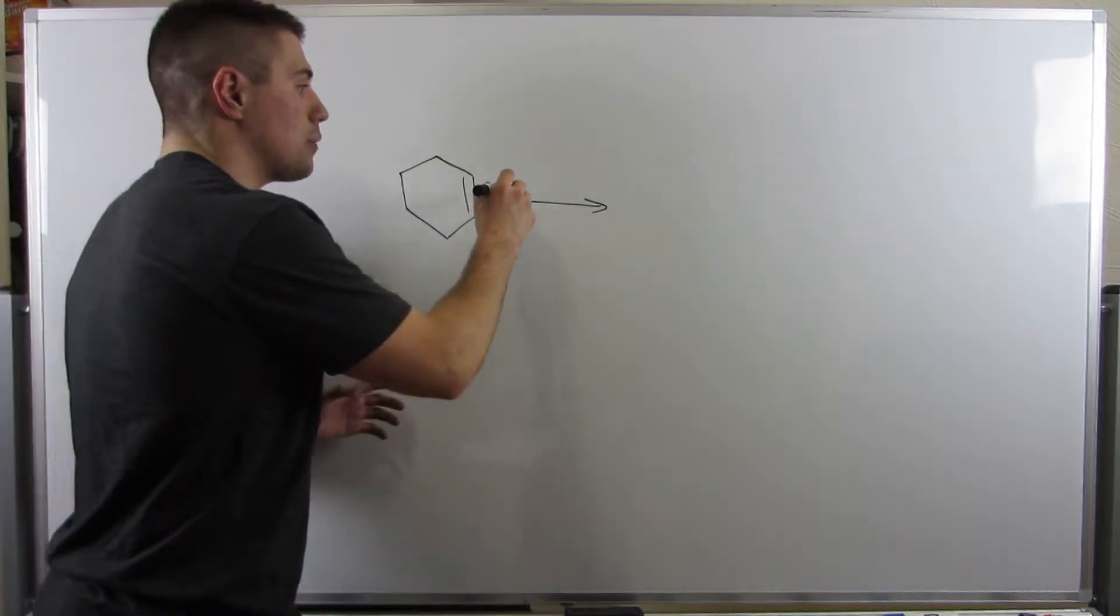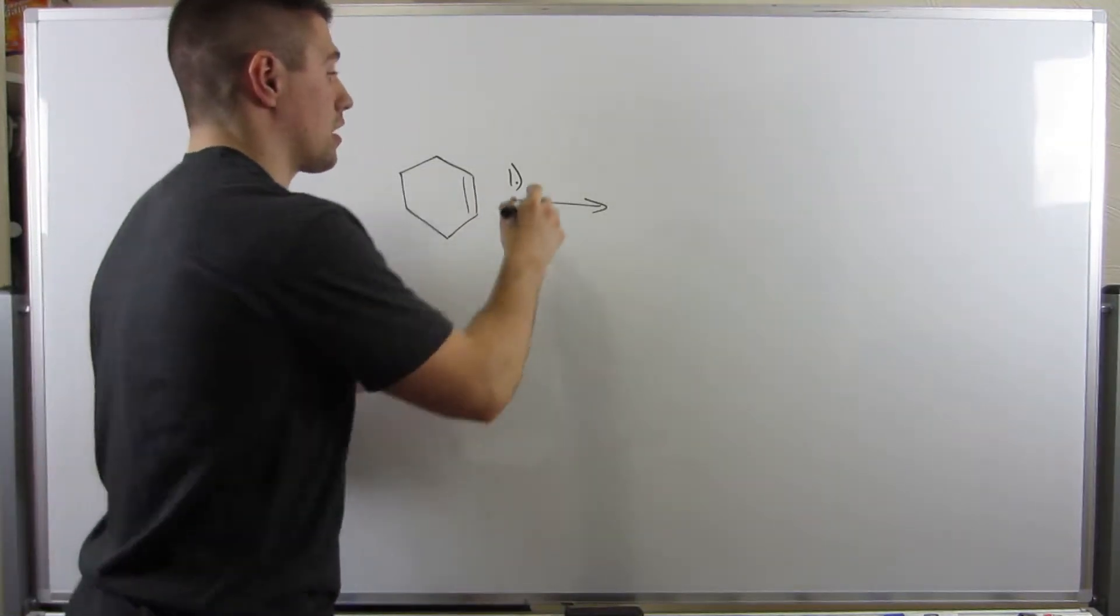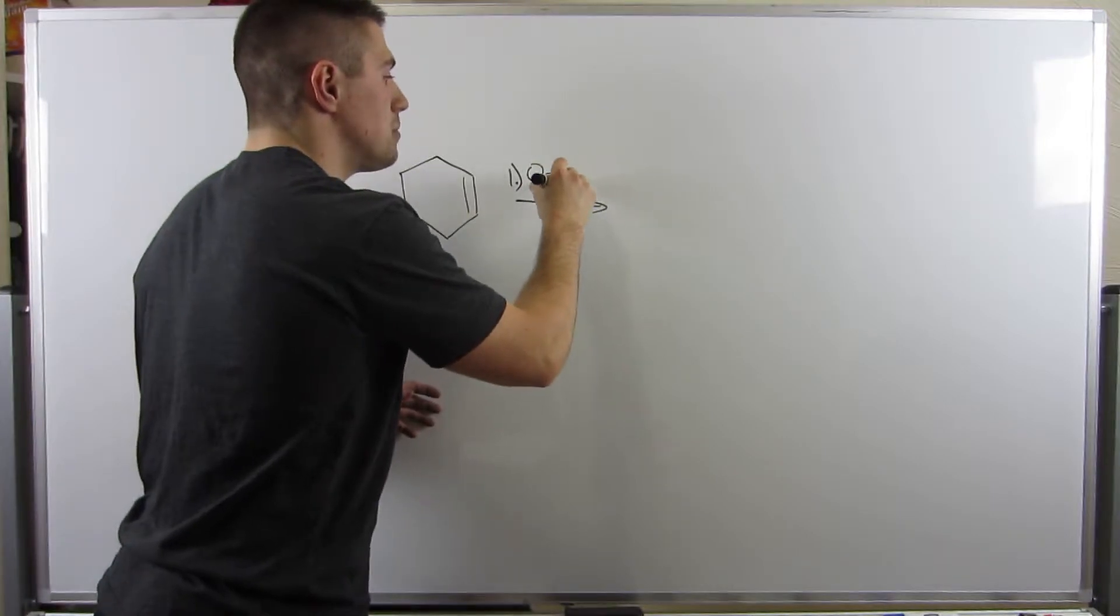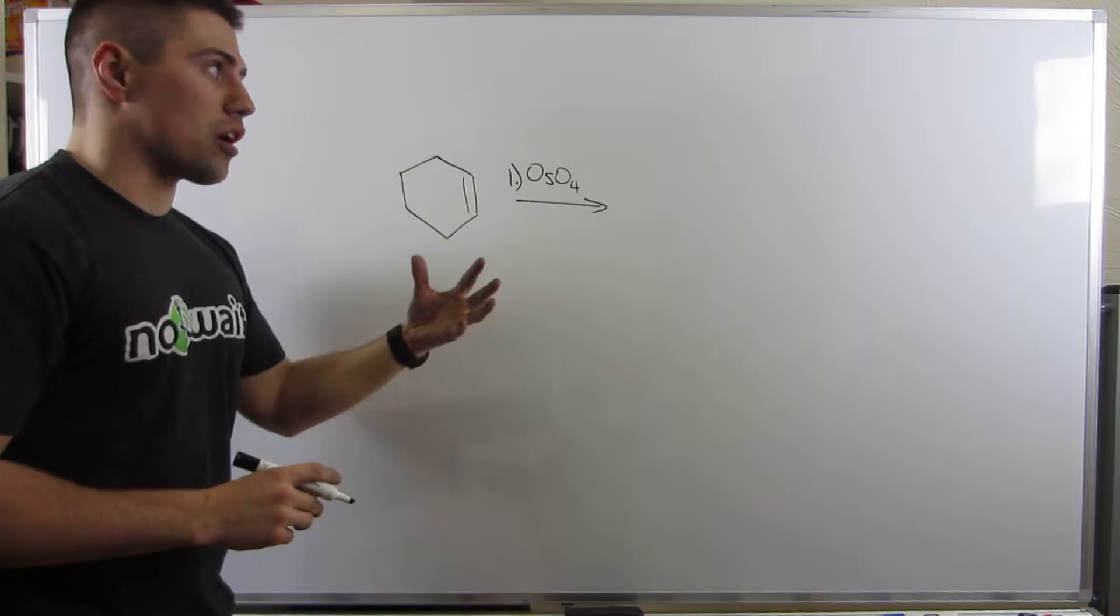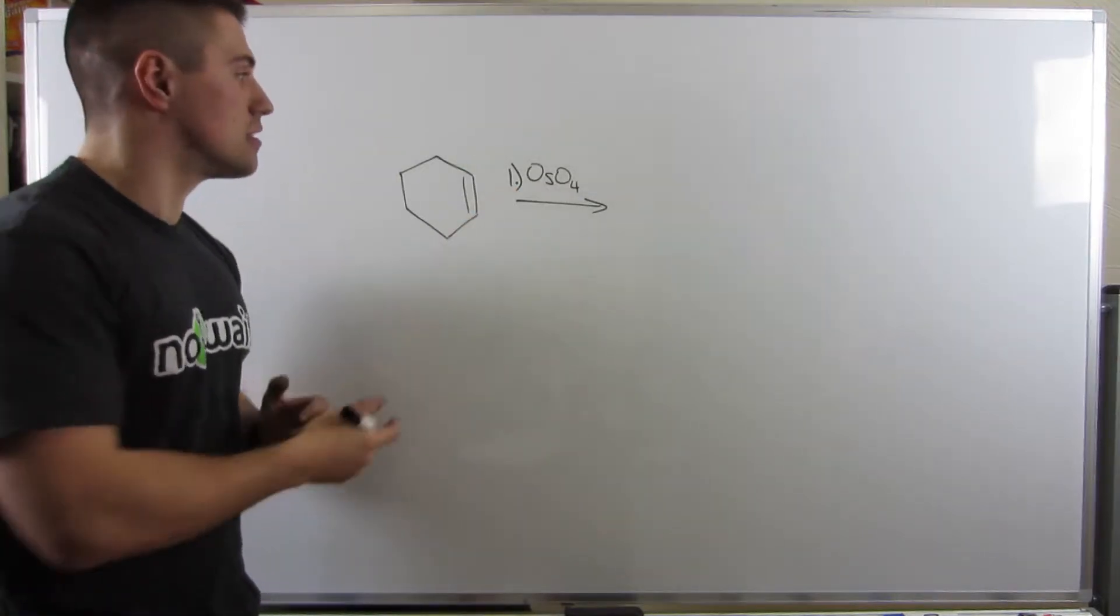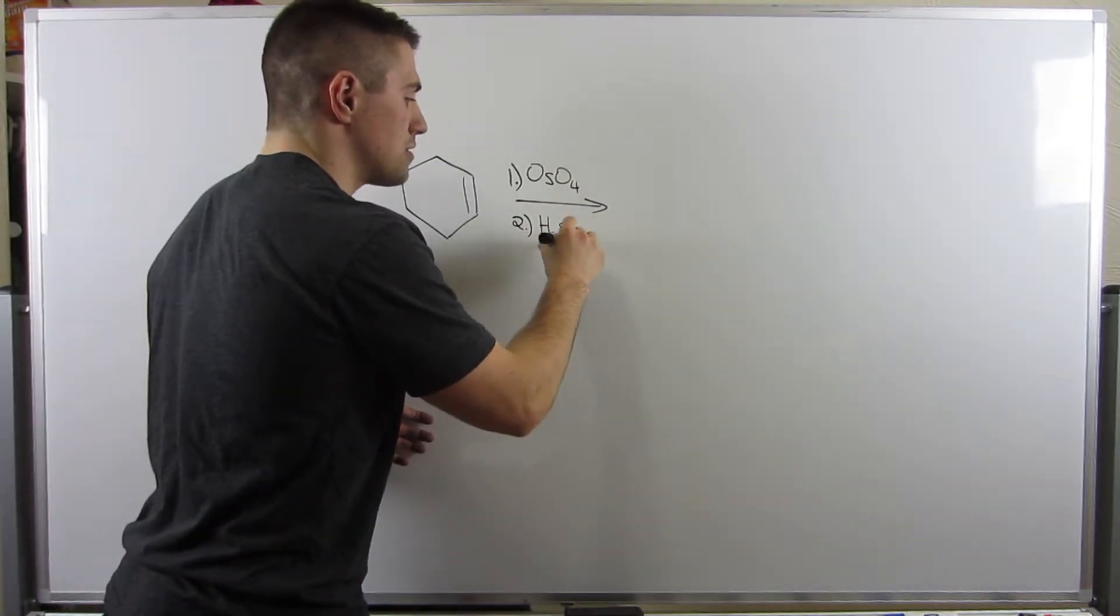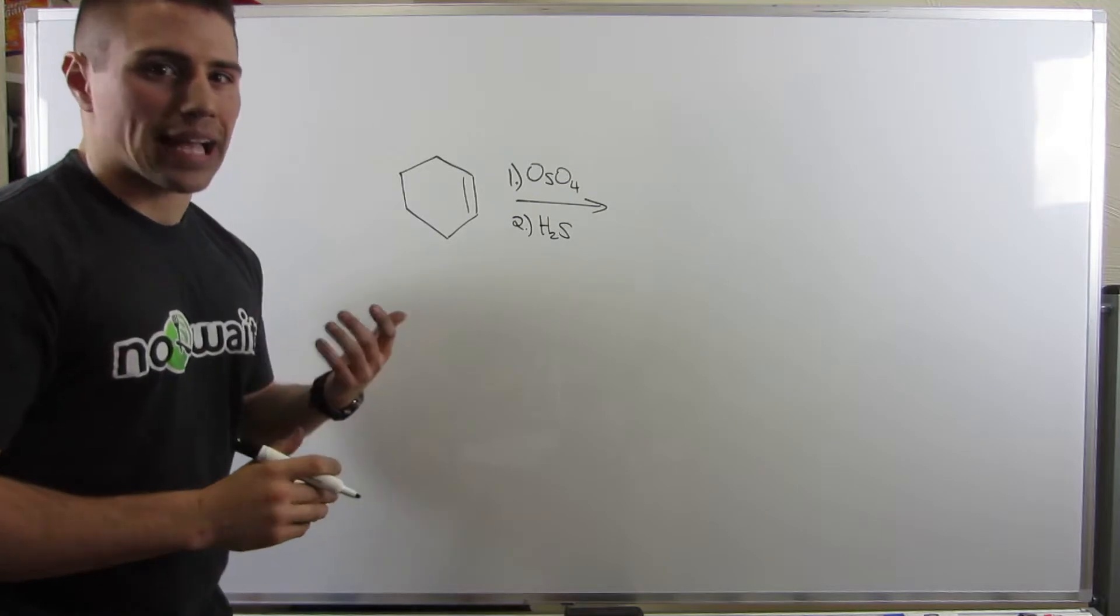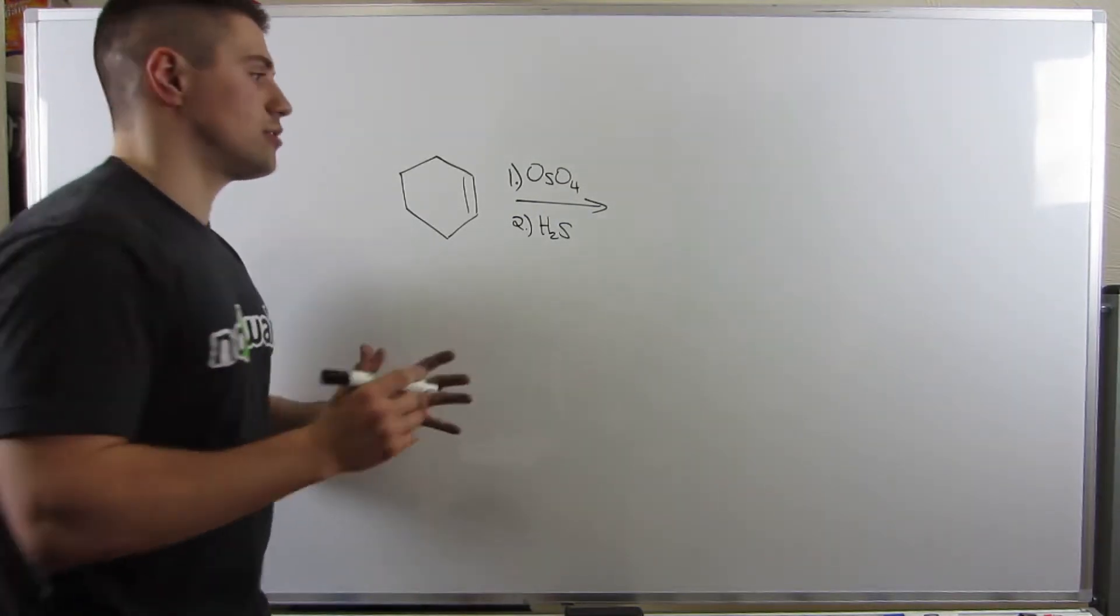If I were to throw in, and personally I never thought I'd use this element on the periodic table, osmium tetroxide. OS for osmium, four oxygens, that's where the tetra, tetroxide comes from. A little throwback to the naming prefixes. And a second step of H2S, it's like a workup acid. Again, no mechanism, so don't worry about it.